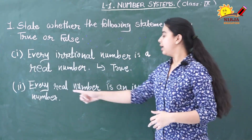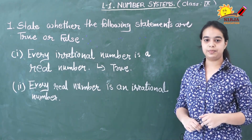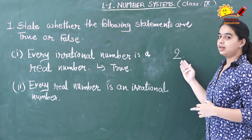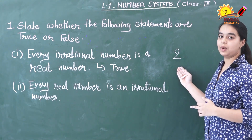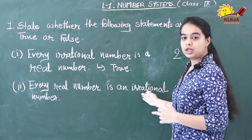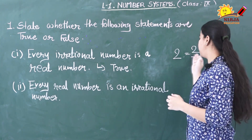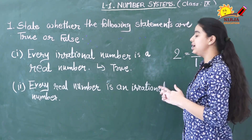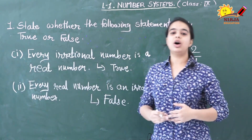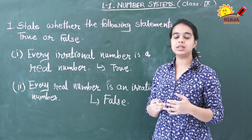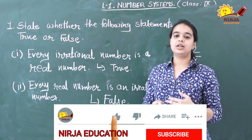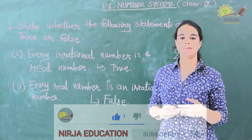Now let us see the next statement: every real number is an irrational number. Let us take the real number 2. As you can see, 2 is not an irrational number because we can write 2 in the form of p by q as 2/1. As per the definition of irrational numbers, irrational numbers cannot be written in the form of p by q. So every real number is not an irrational number — this statement is false. I hope you now have a clear idea about real numbers and how to indicate them on the number line. Don't forget to subscribe to our channel Neerja Education. Thank you.